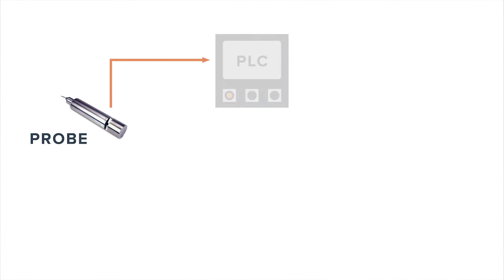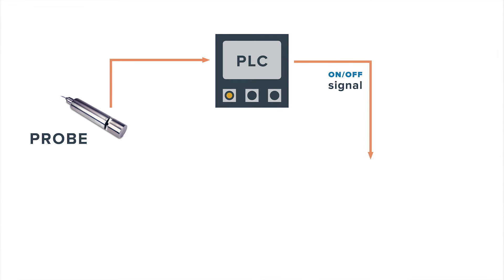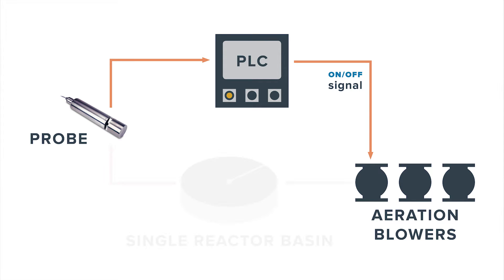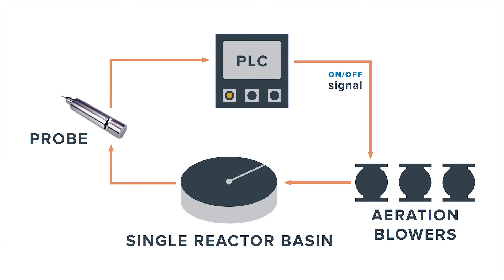The probe takes the reading and feeds it to the PLC. The PLC can then adjust the blower output accordingly for the ammonium concentration. Some of the applications for online nutrient monitoring include dissolved oxygen probes, ammonium probes, as well as phosphorus probes. These probes can help reduce blower output and improve energy efficiency, or they can be used to regulate chemical feed so that you're not overdosing or using more chemical than necessary.